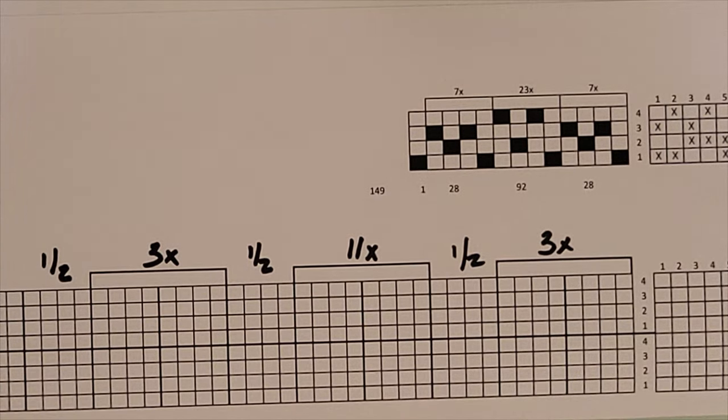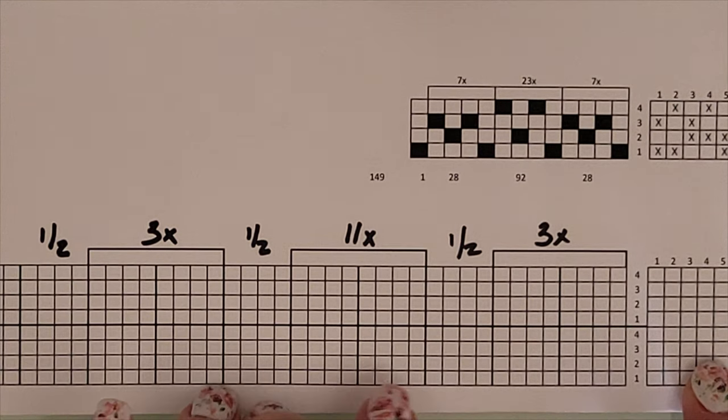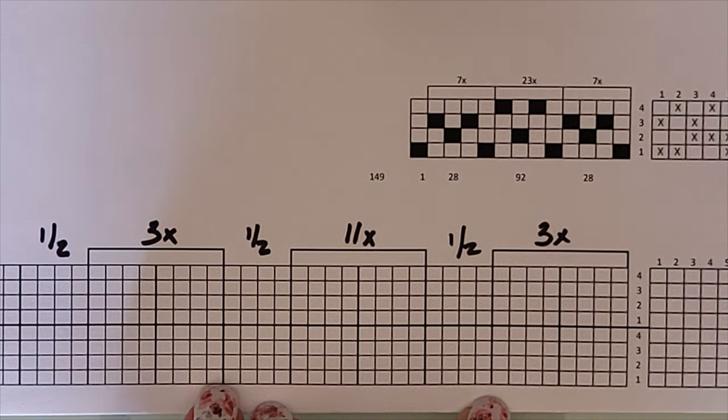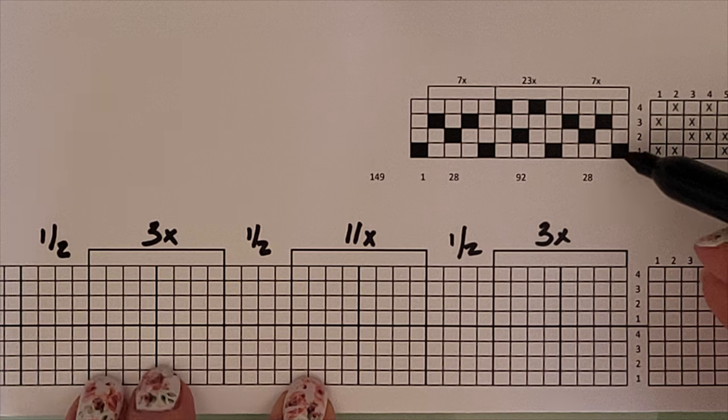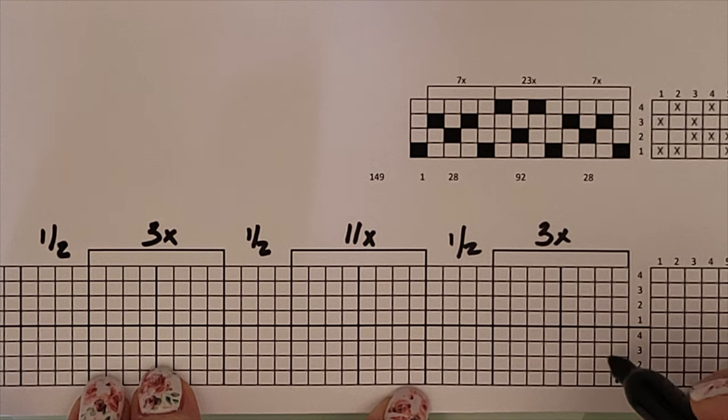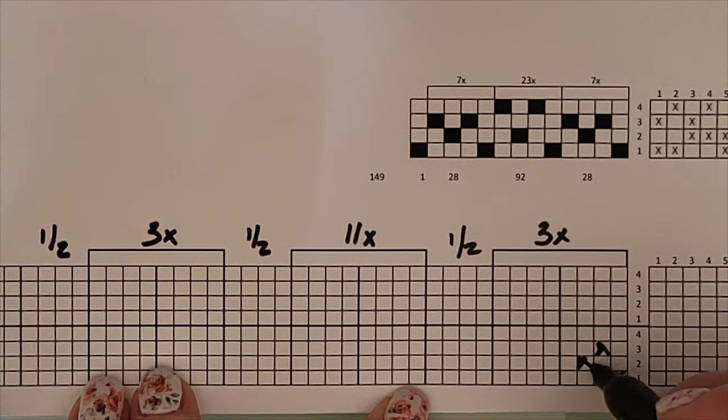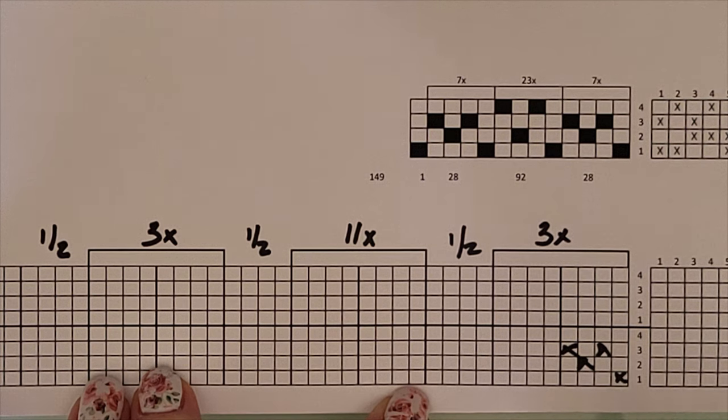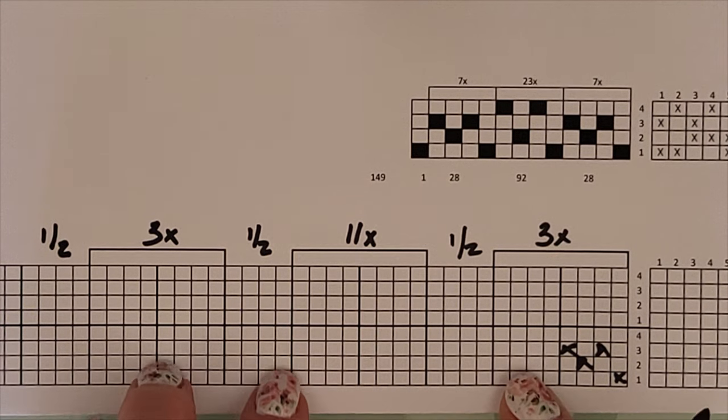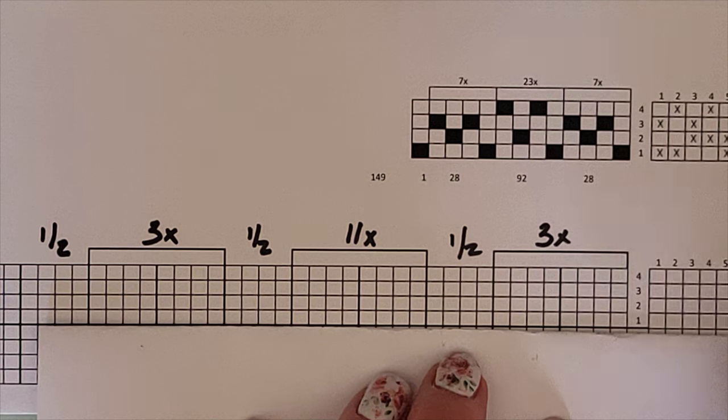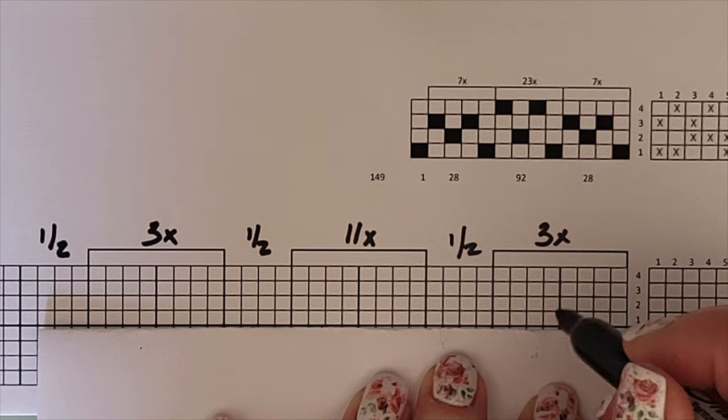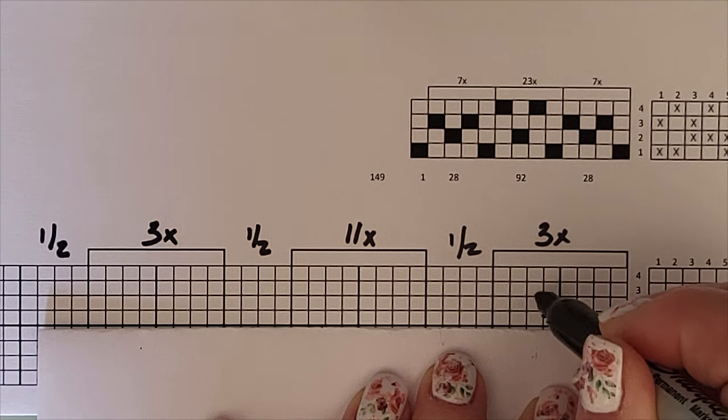So we start out by taking the first set of repeats and marking them here on the bottom four shafts. One, three, two, three. Then we're going to move over to the next set of four and up to the next set of four shafts and do the same thing. One, three, two, three.